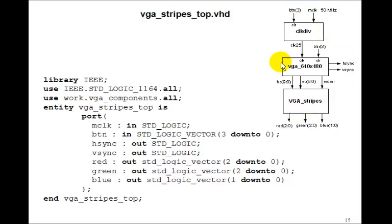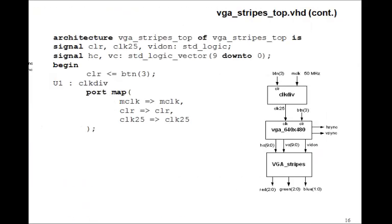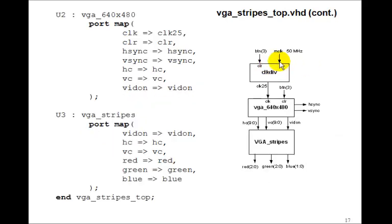Let's make the top level design. That's straightforward. We have a component for clock div, for VGA 640 by 480, and for VGA stripes. The input will be our 50 megahertz M clock. Buttons for our clear. Here's H-sync and V-sync out, and red, green, and blue. So we'll make the port map for clock div. We've got signals HC and VC. Here's the component VGA 640 by 480. We'll port map that, and we'll port map the VGA stripes.